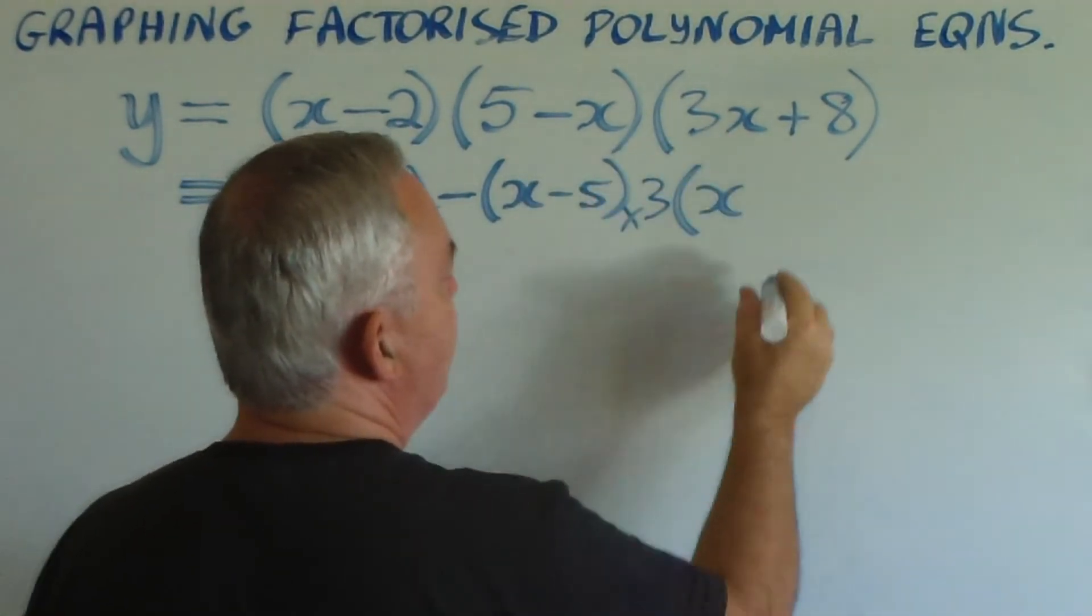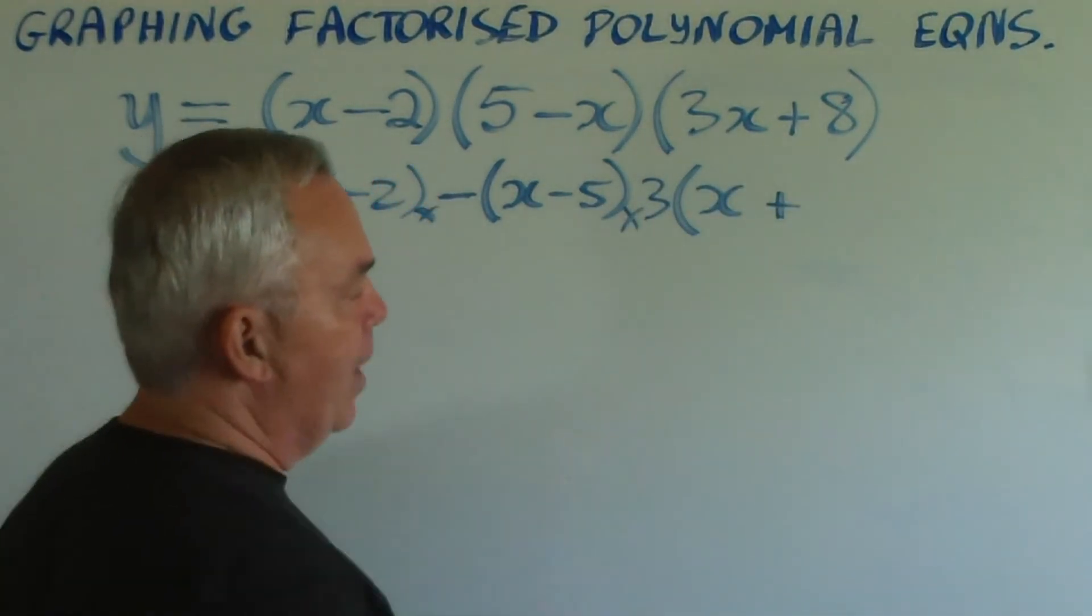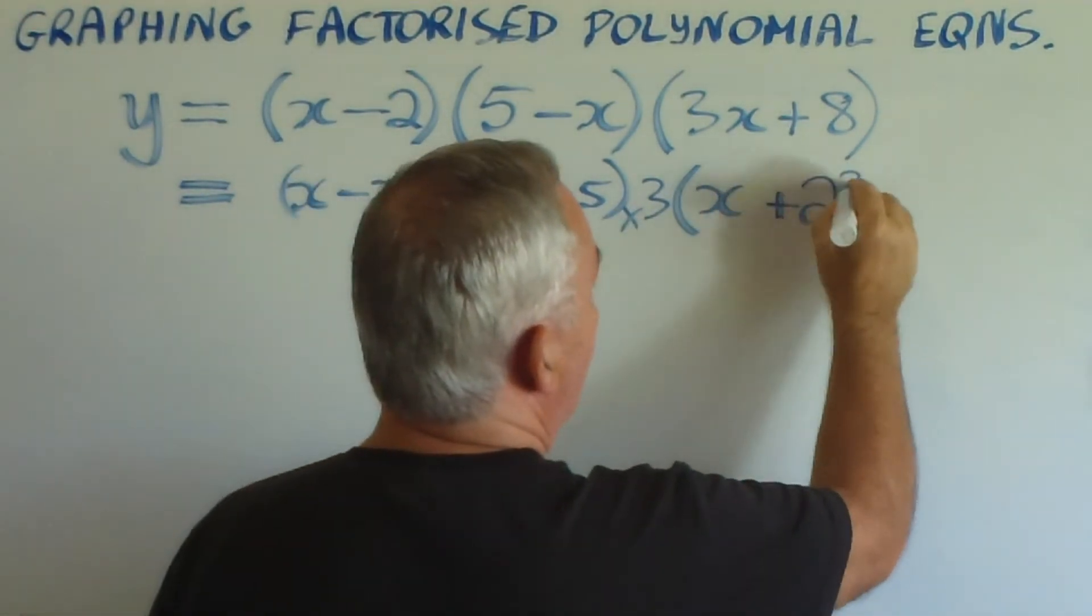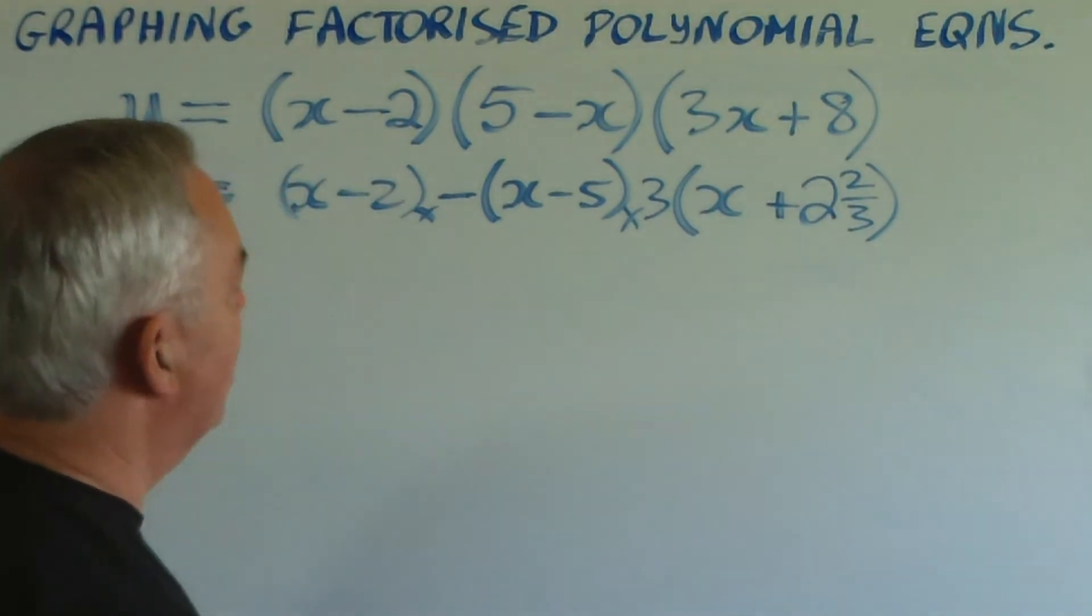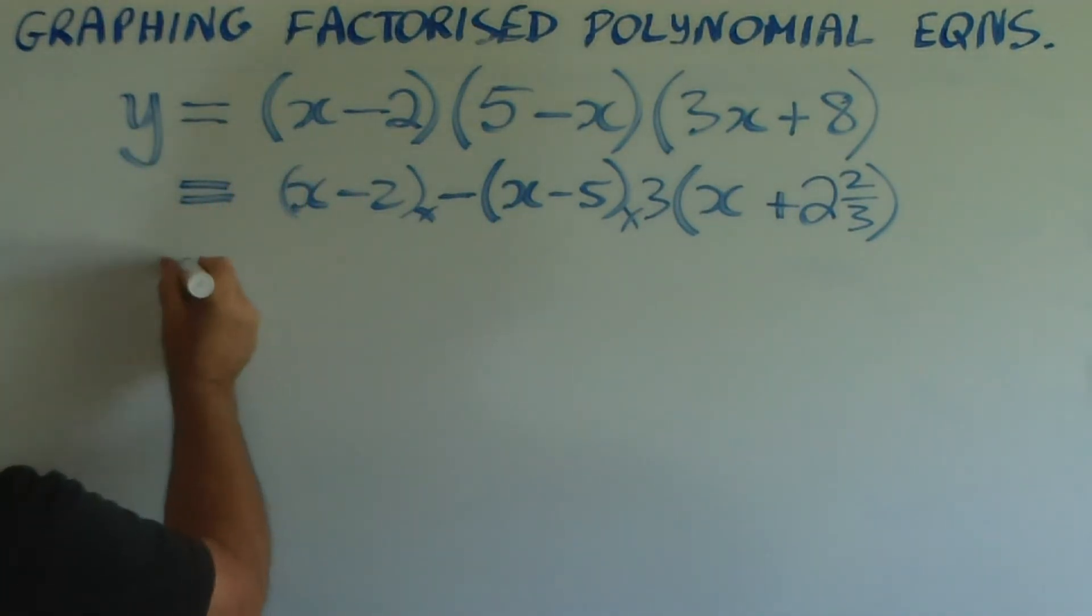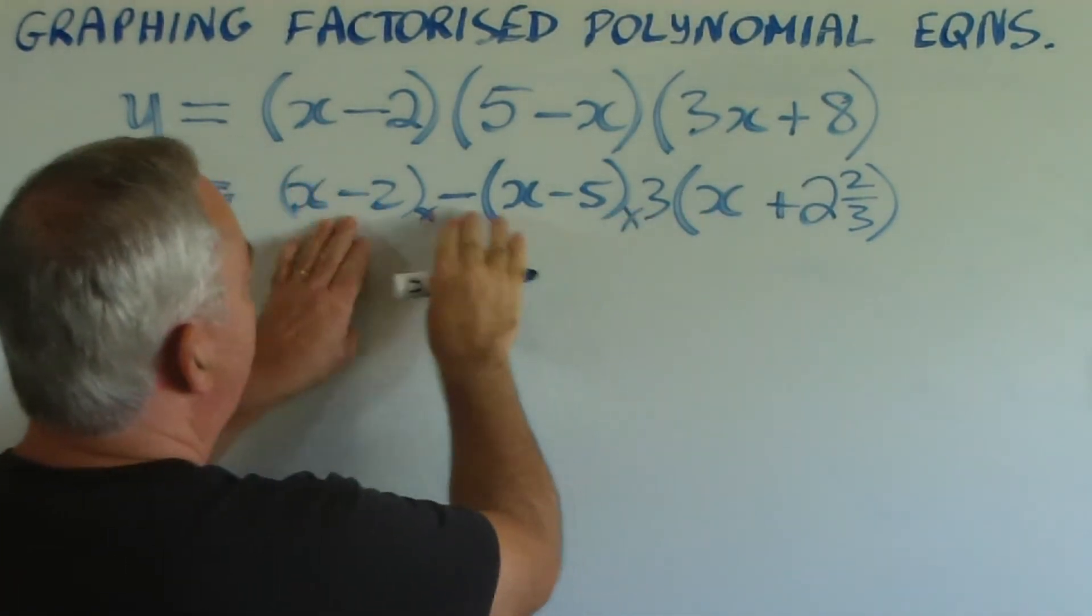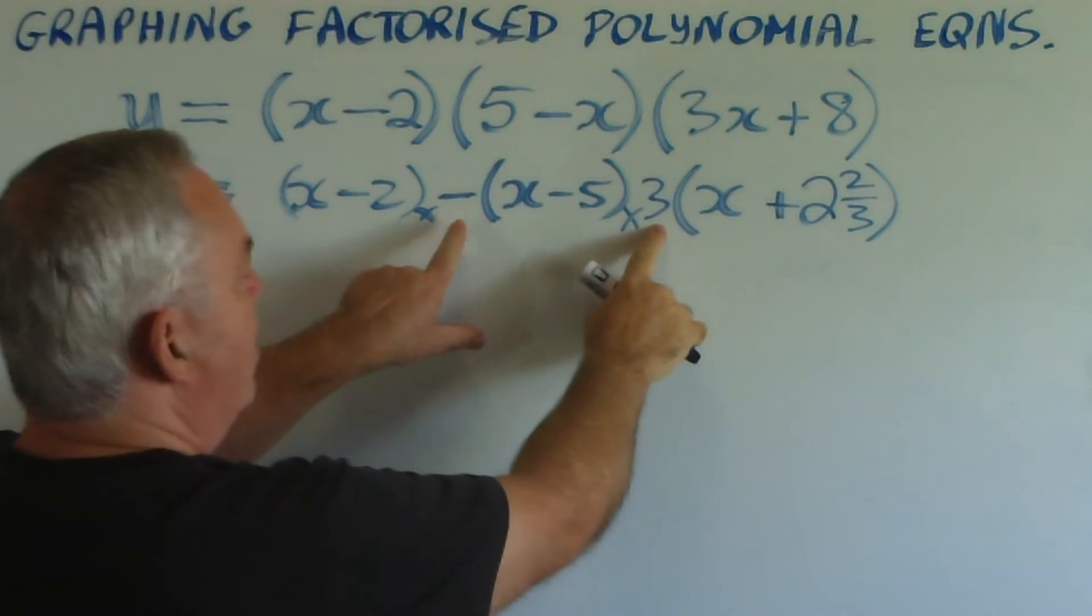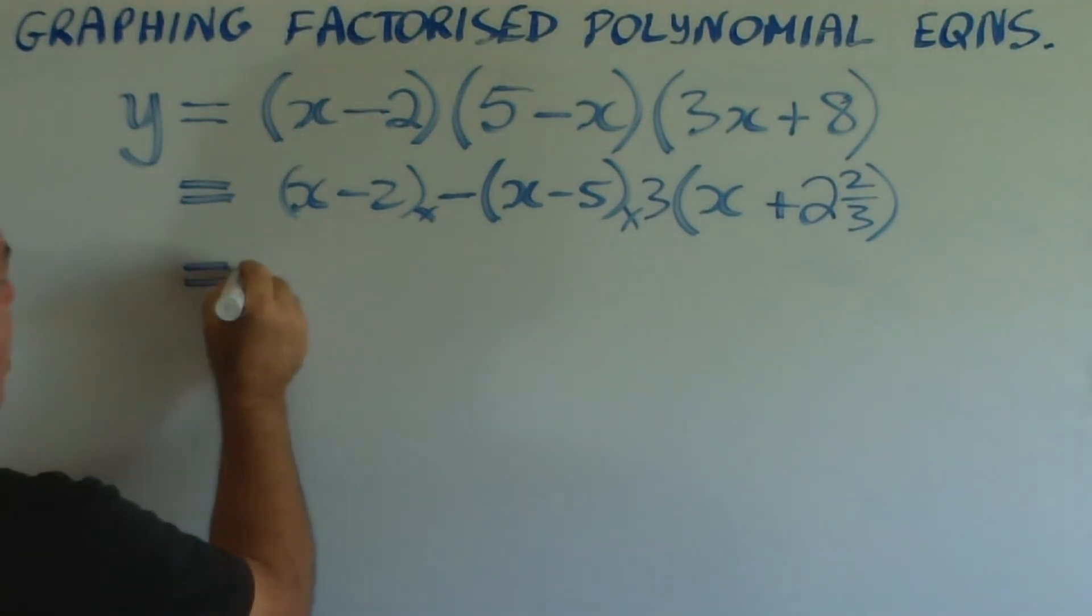3 times x is 3x. And you'll excuse me if I use fractions rather than decimals, but 3 times 2 and 2 thirds makes 8. We can keep these factors together, but these two constants, the minus one and the three, we can multiply and bring out the front.